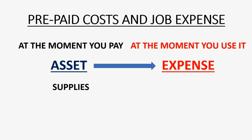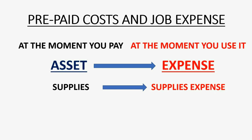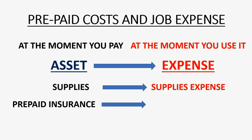So if you purchased supplies in advance, at the moment you purchase the supplies, you have an asset. Then over time, as you use the supplies, the amount of supplies you use becomes supplies expense, and the asset value is decreased by the amount that you used. Same thing with prepaid insurance: when you pay the policy up front, you have an asset, and as time goes by, the amount of the policy you used over time becomes insurance expense.